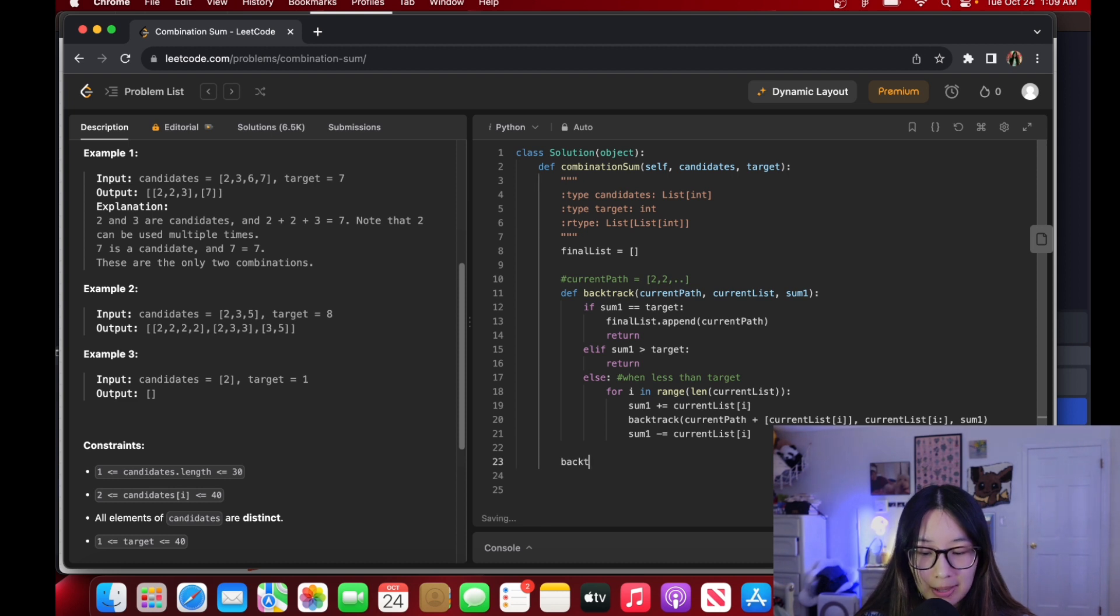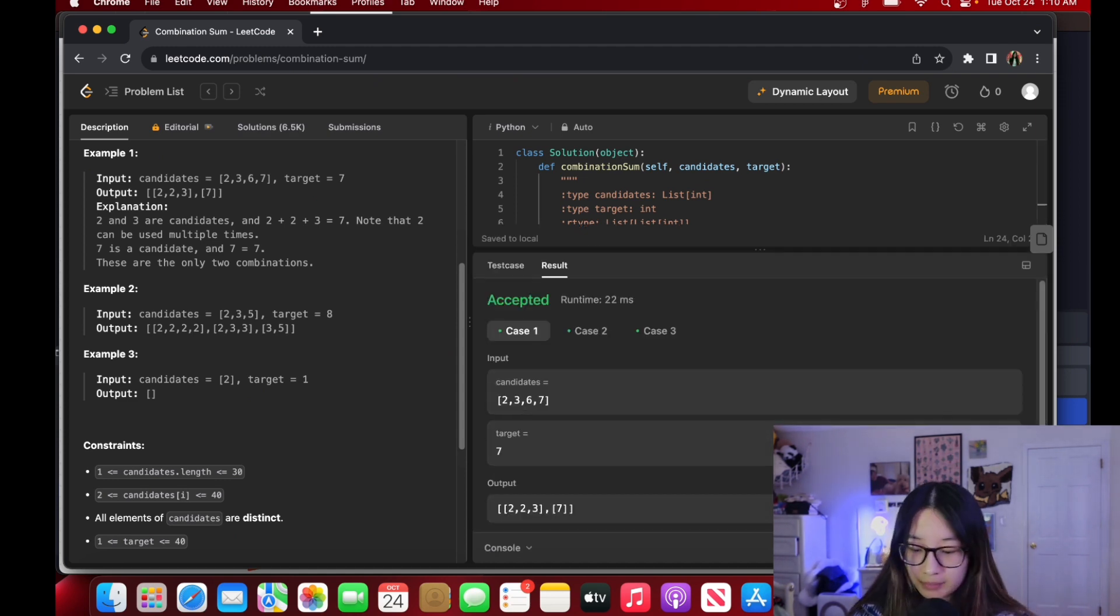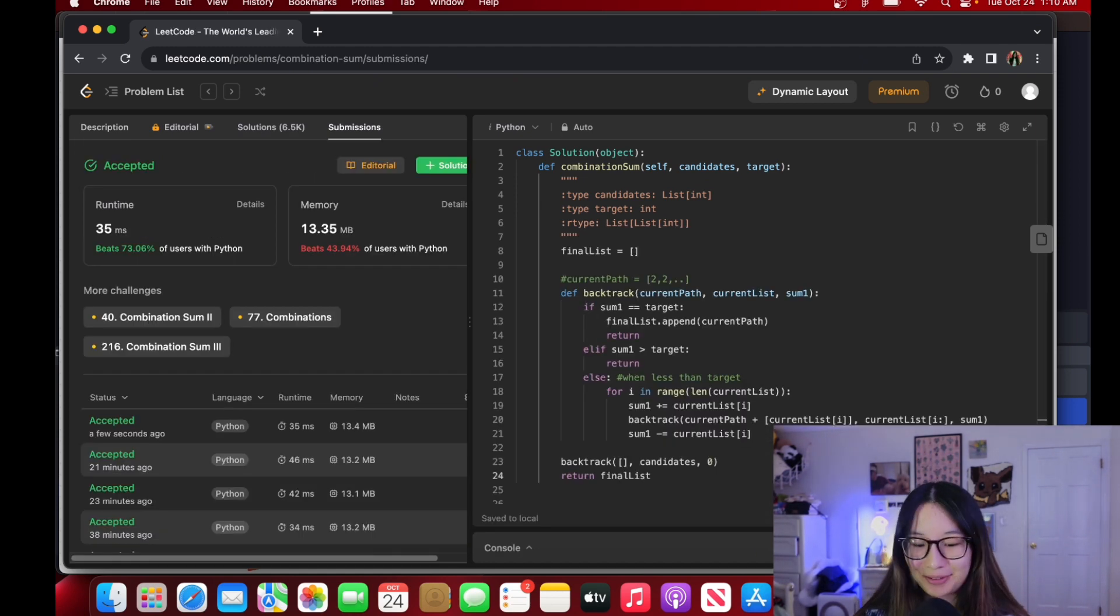We can call backtrack. We can start with an empty list for current path. We have our candidates list as our current list and our sum1 is zero. And we can return final list. Let's run it. Excellent. Perfect. Let me know what other questions you might want to see.